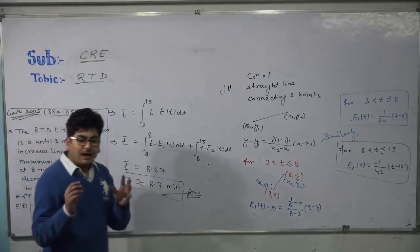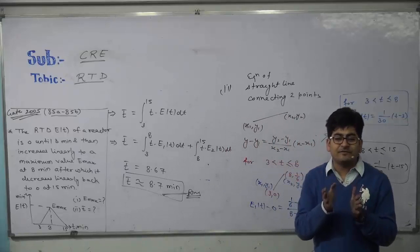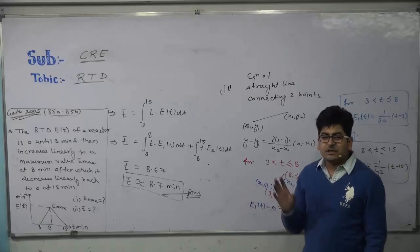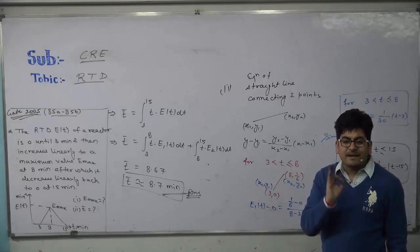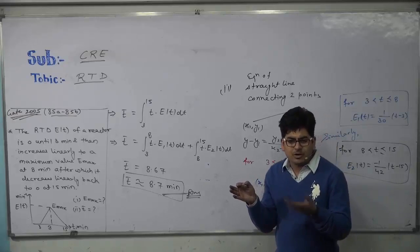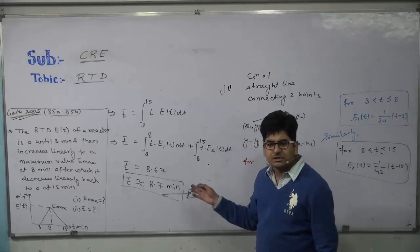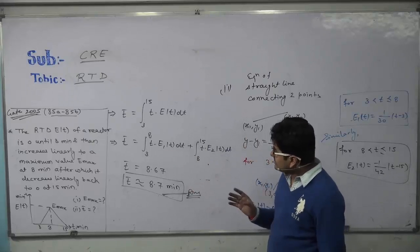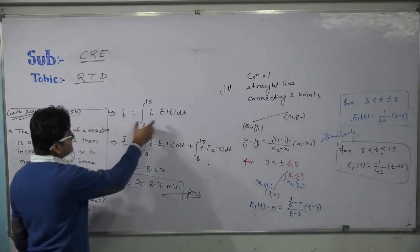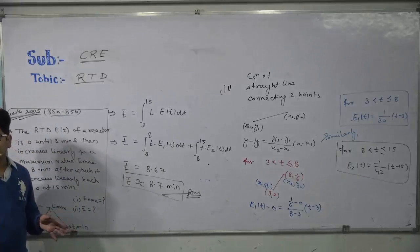Mark my words: RTD is one of the simplest topics in Chemical Reaction Engineering — it is one of the scoring and important topics in GATE. You just need to know two things: first, basic mathematics up to class 10 (simple integration and differentiation); and second, the meaning of the terms — t-bar is given by that integral and the area of the E curve is 1. If you know these meanings, you can solve it easily.